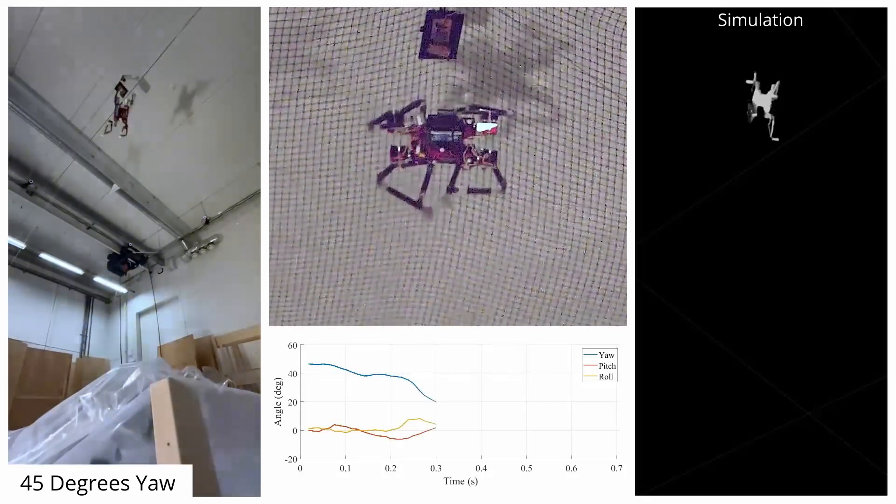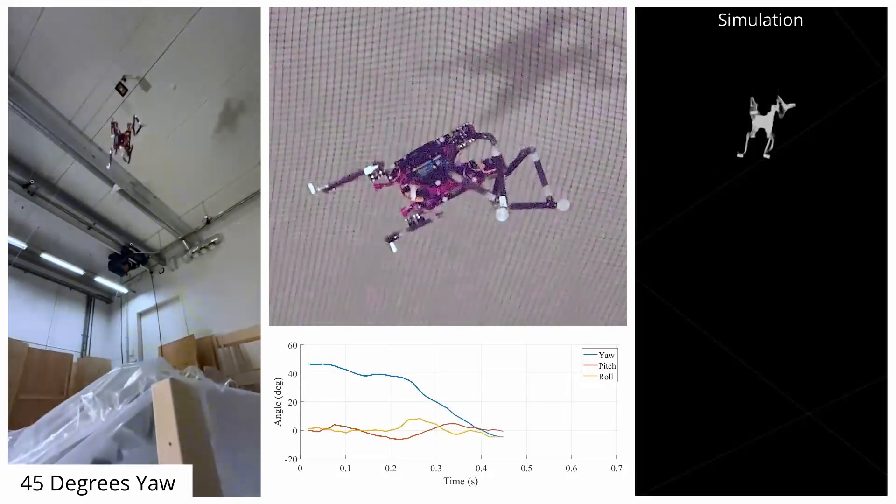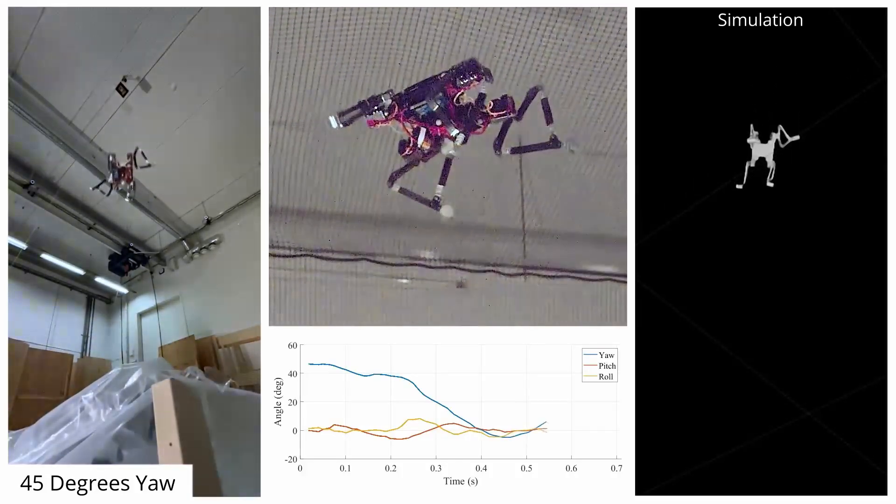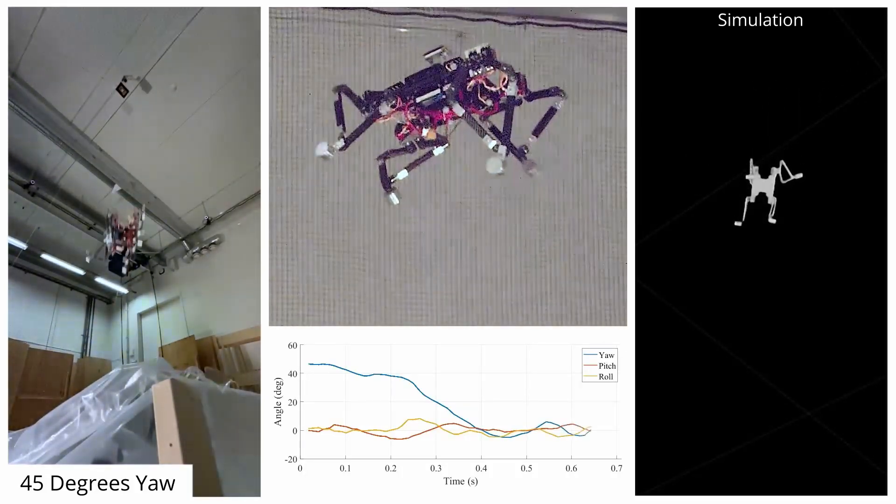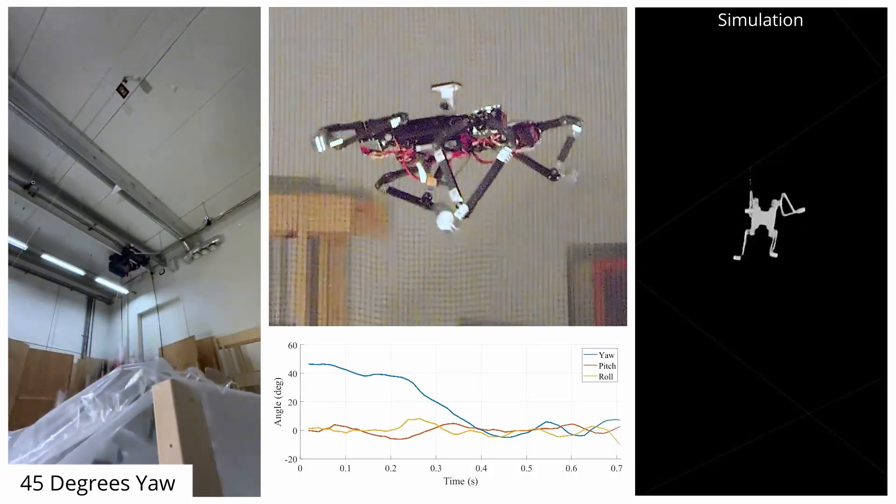To conduct the experiments we raised the quadruped into a mount designed to lock it into a known initial configuration and installed a magnetic switch to remotely release it, thereby letting it fall into a foam pit.